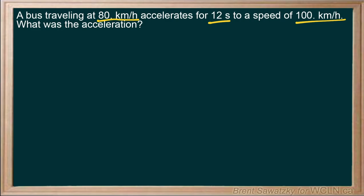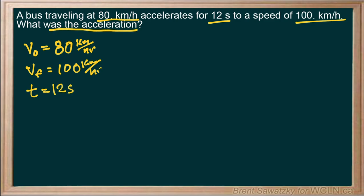So let's start putting that into our knowns and unknowns right away. So our V0, well that'll be the 80 kilometers per hour. That's the initial velocity. And then we see it gets to a velocity of 100 kilometers per hour. And it took 12 seconds to do that. And what we're looking for is the acceleration.